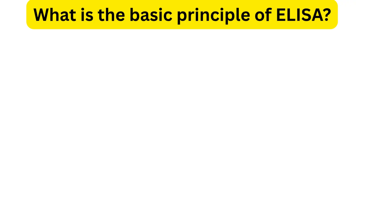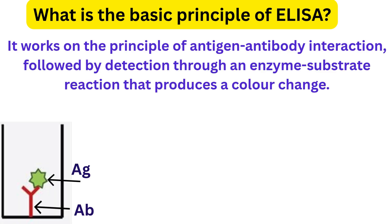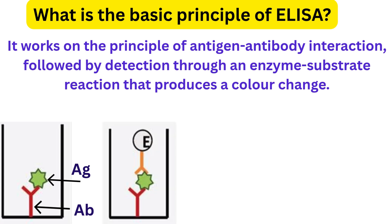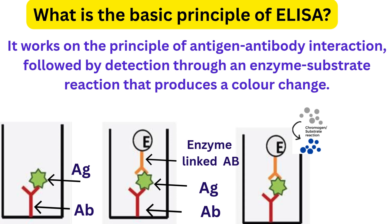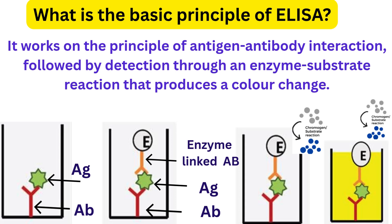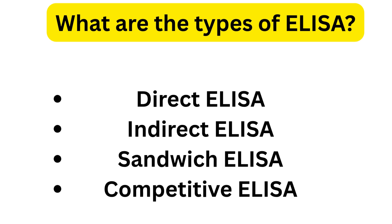Next very important question: what is the basic principle of ELISA? ELISA works on the principle of antigen-antibody interaction followed by detection through an enzyme-substrate reaction that produces a color change. Various questions can be asked from ELISA, including its types. There are four main types: direct, indirect, sandwich, and competitive.